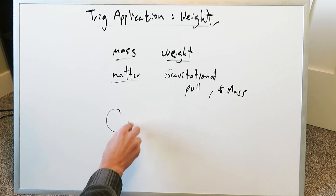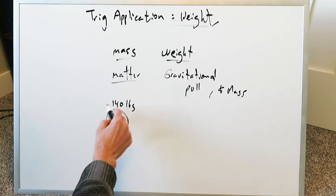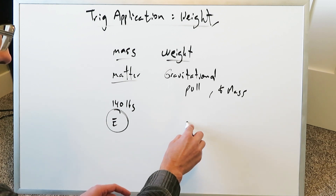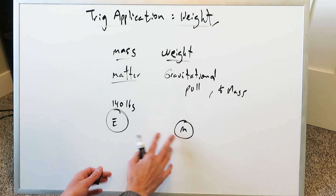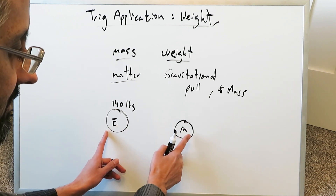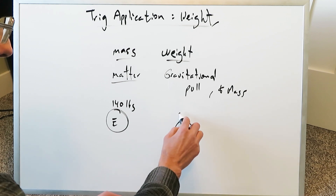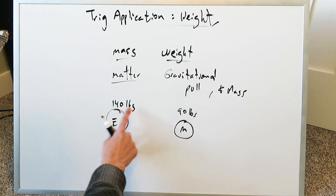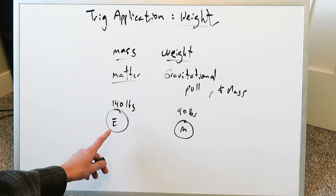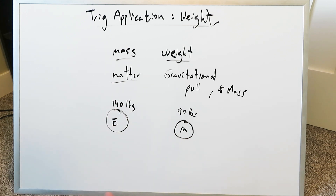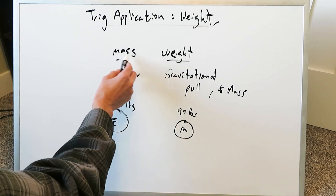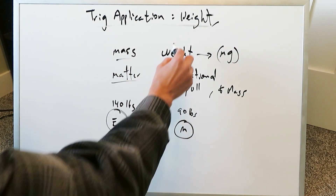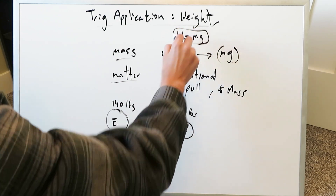For example, on planet Earth my weight might be 140 pounds, but on the moon — Earth's planetary satellite — my weight could be 90 pounds. My mass is the same on both, but my weight differs because Earth has more gravitational force than the moon. When we're talking about weight, we're talking about mass times gravity: mg. Weight is equal to mg, and that is going to be the basis of everything we'll be looking at here.